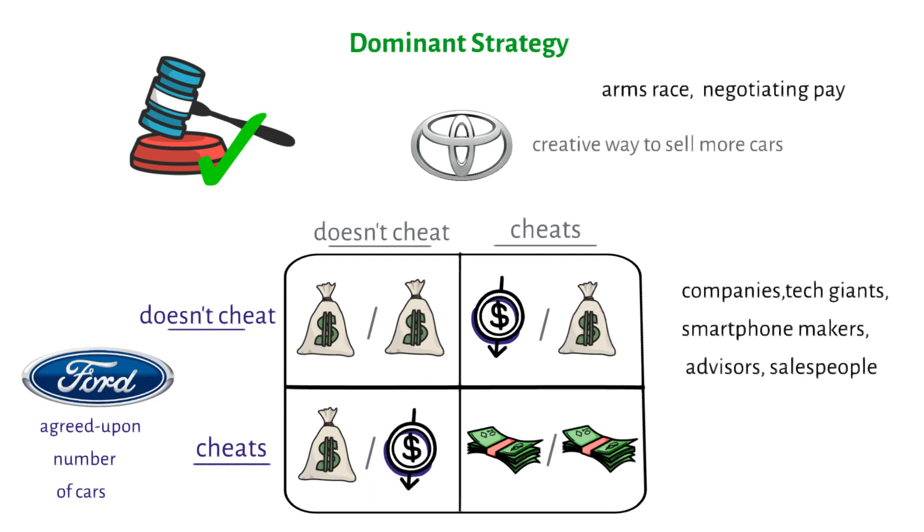If some of the details of the prisoner's dilemma were changed, the end result would be different. If the prisoners could sit down together, talk, and make plans for the future, they might choose to work together instead of turn on each other.